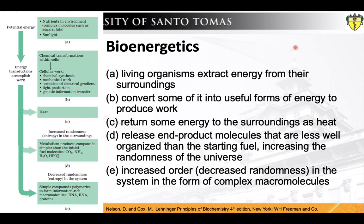We are all composed of cells. In the bioenergetics world, it is the cells that are the consummate transducers of energy, capable of interconverting chemical, electromagnetic, mechanical, and osmotic energy with great efficiency. Organisms will have to take in potential energy from the environment — nutrients taken from the surroundings in the form of food, or for photosynthetic plants, sunlight. Subsequently, these organisms convert some of this energy into useful forms of energy for work like biochemical synthesis, locomotion, other mechanical work, osmotic and electrical gradients, and genetic information transfer. However, not all energy will be converted to work; some will be returned to the surroundings in the form of heat.